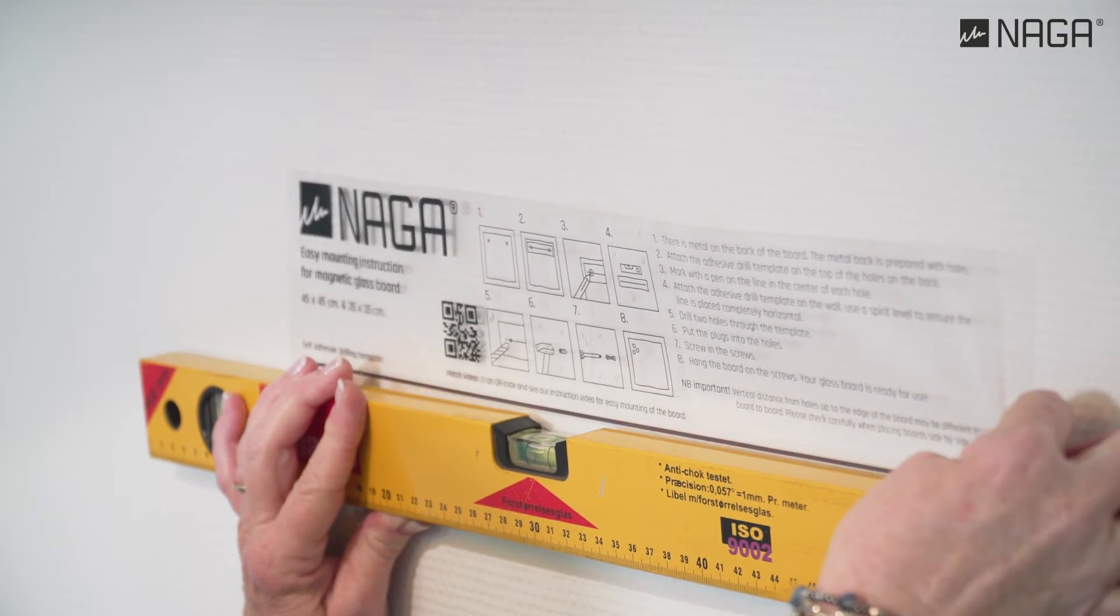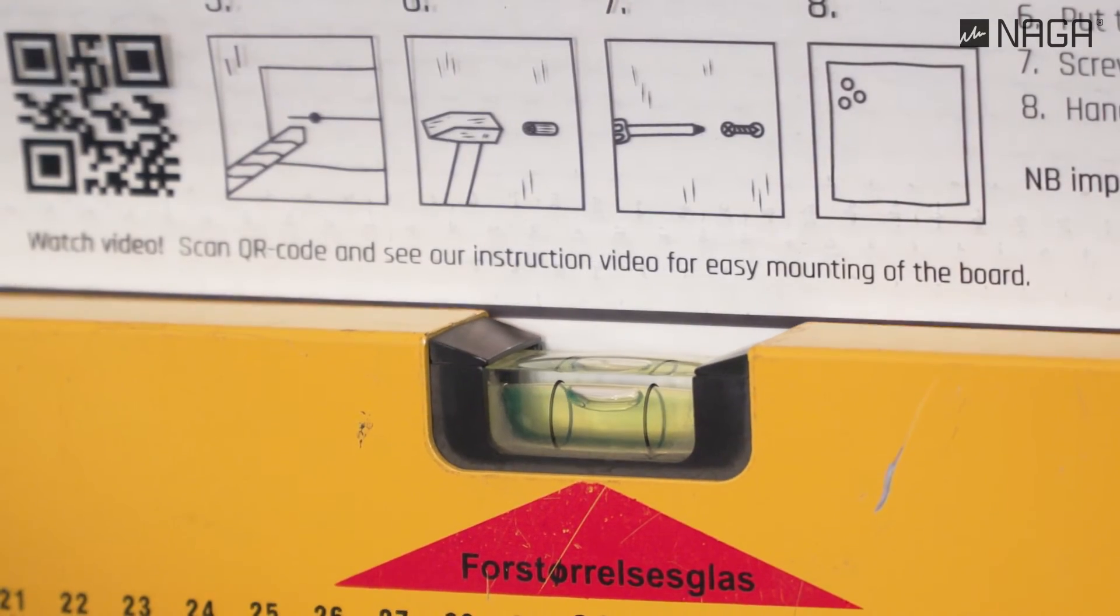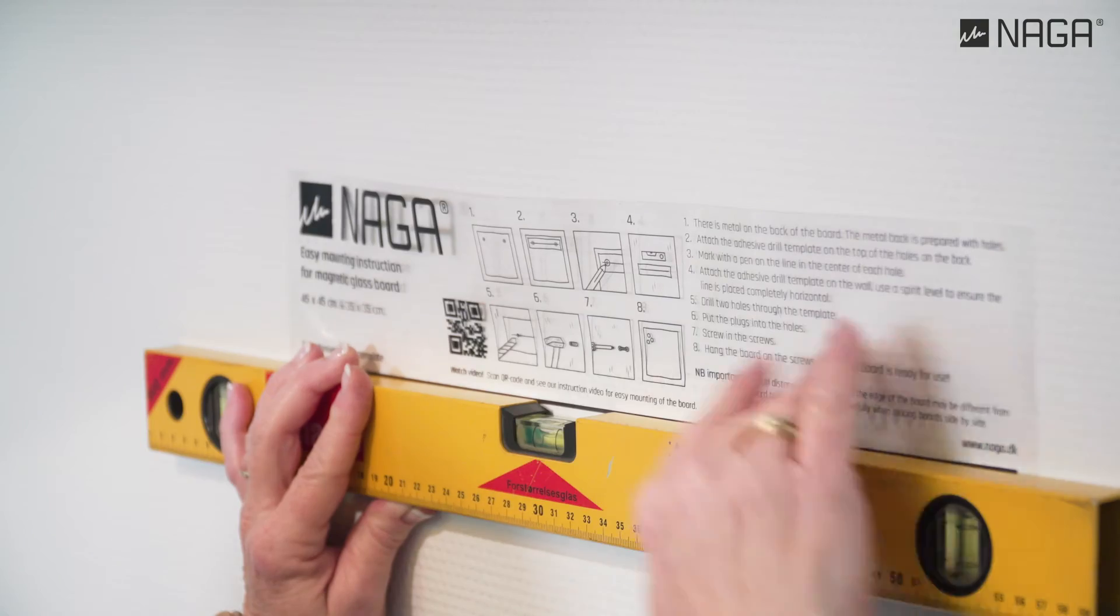Attach the adhesive drill template to the wall. Use a spirit level to ensure the line is completely horizontal.